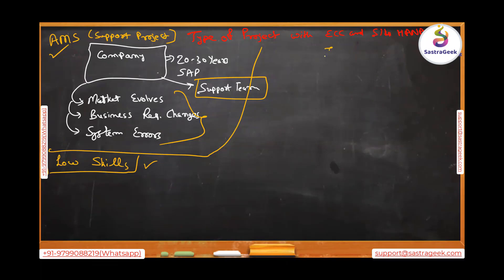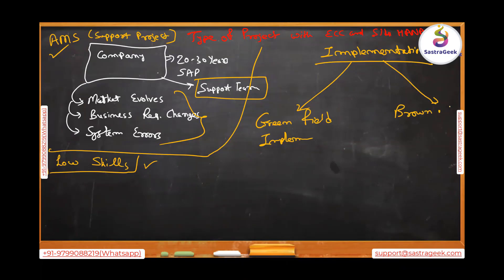The second type of project is called an implementation project. Now here there are two terminologies - greenfield implementation and brownfield. This is generally a question many times to the very new consultant, people ask in the interview what is greenfield implementation versus brownfield implementation. If people have written in their resume I have worked on three greenfield implementation and two brownfield implementation, we definitely ask this question to make sure the guy understands the definition.